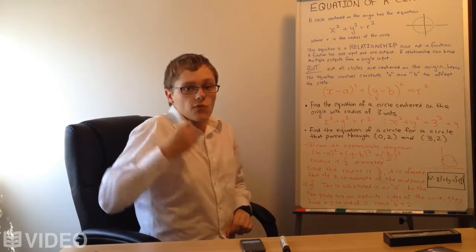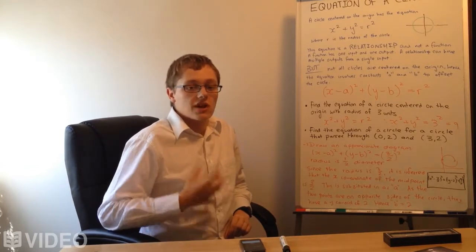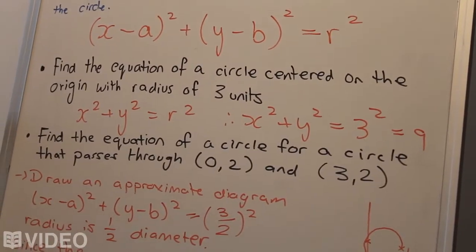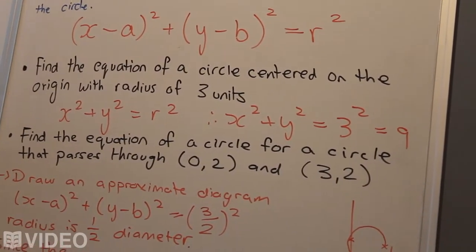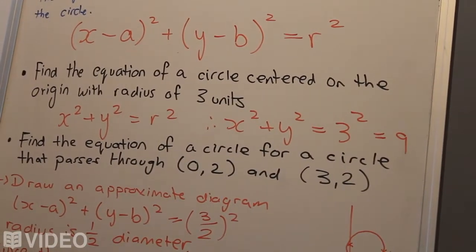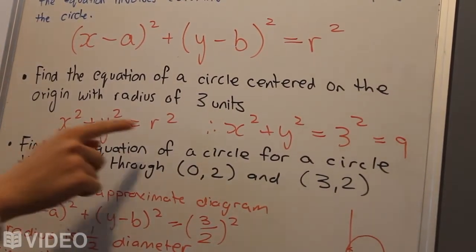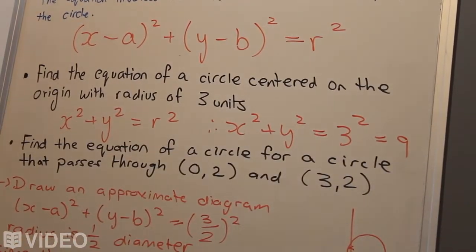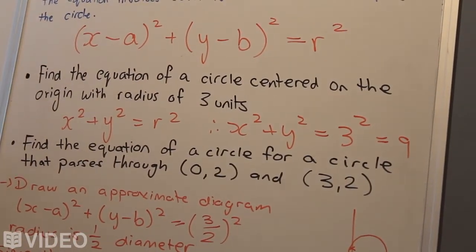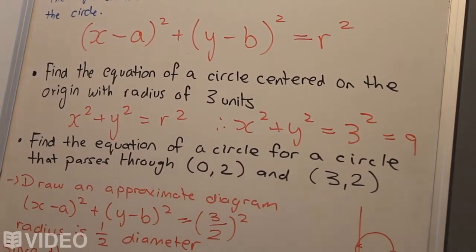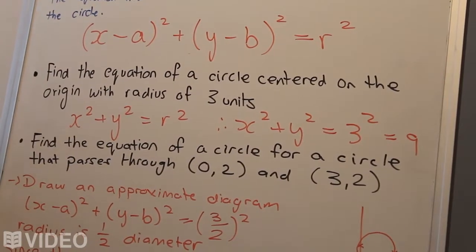Let's start off with a really simple question, just to make sure that we can understand what's happening here. Find the equation of the circle centered on the origin with radius of three units. So we have x squared plus y squared equals r squared. If we have a radius of three units, we simply substitute the radius in as r, and we get three squared. So x squared plus y squared equals nine would be the relationship representing that circle on the Cartesian plane.